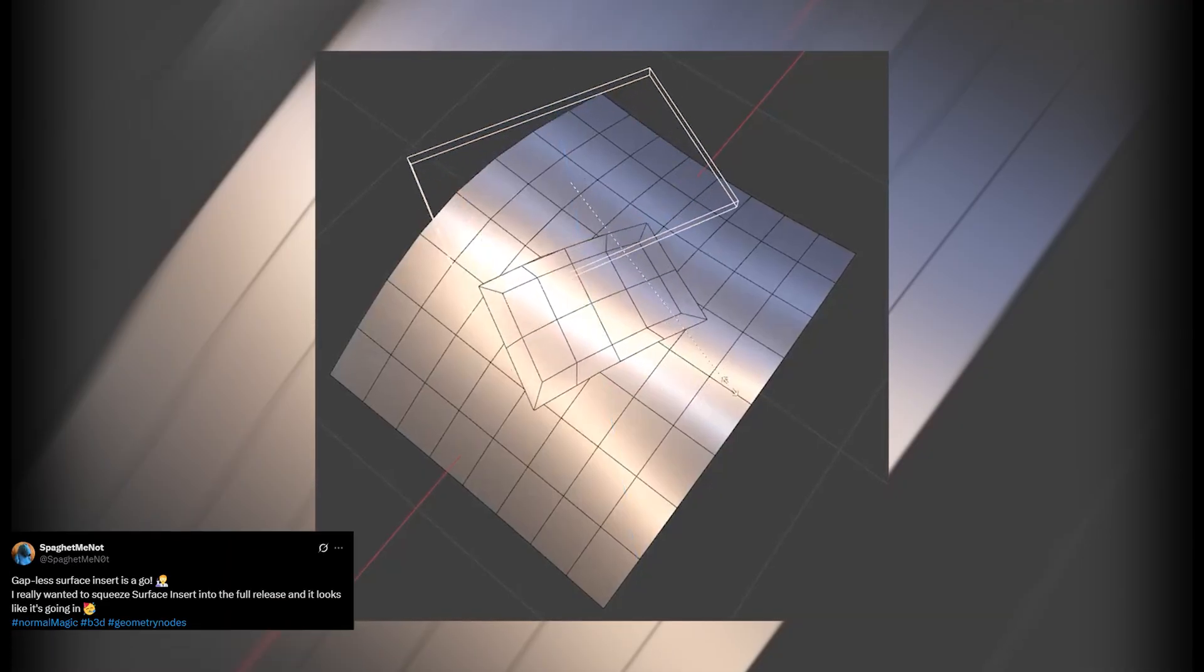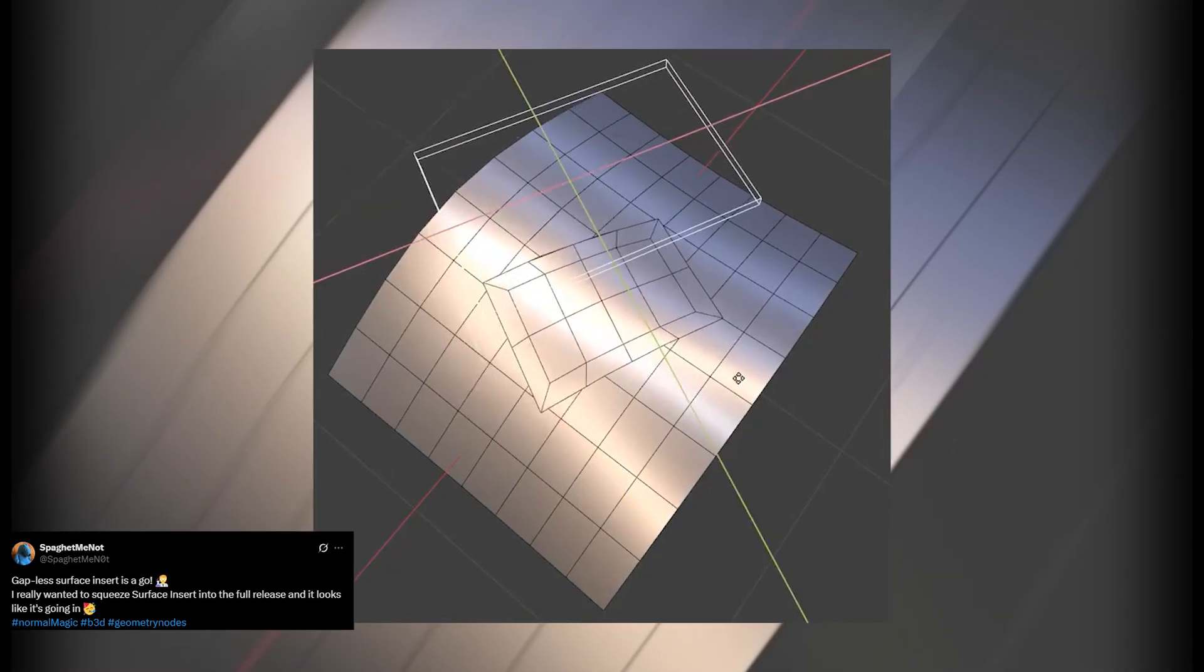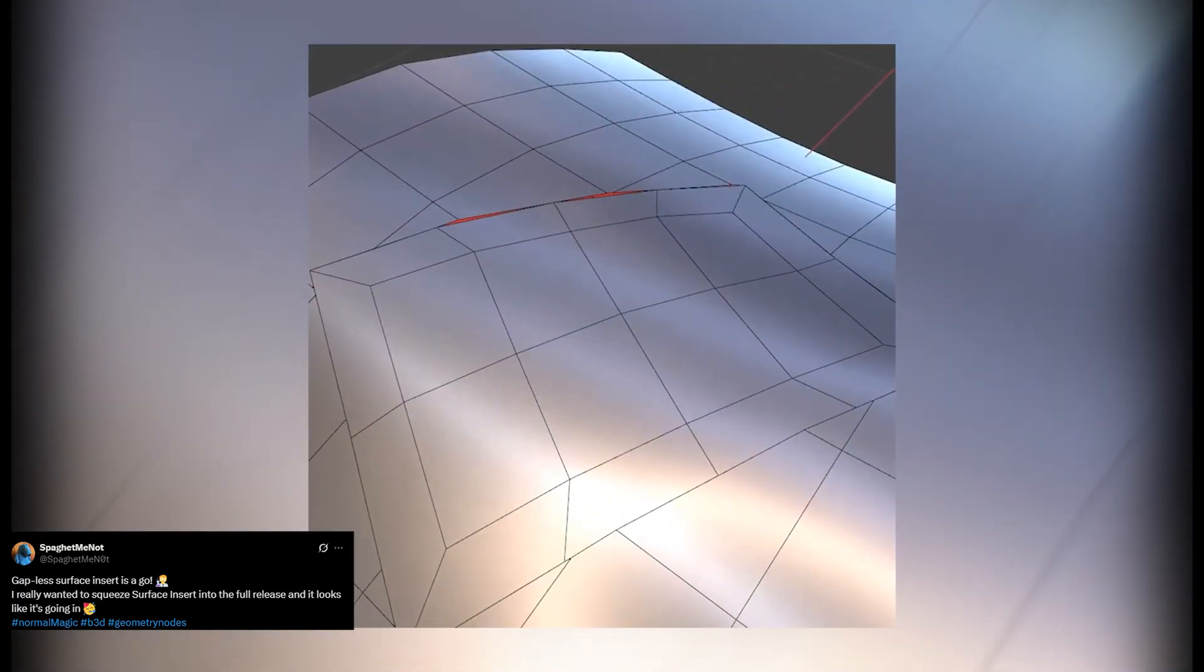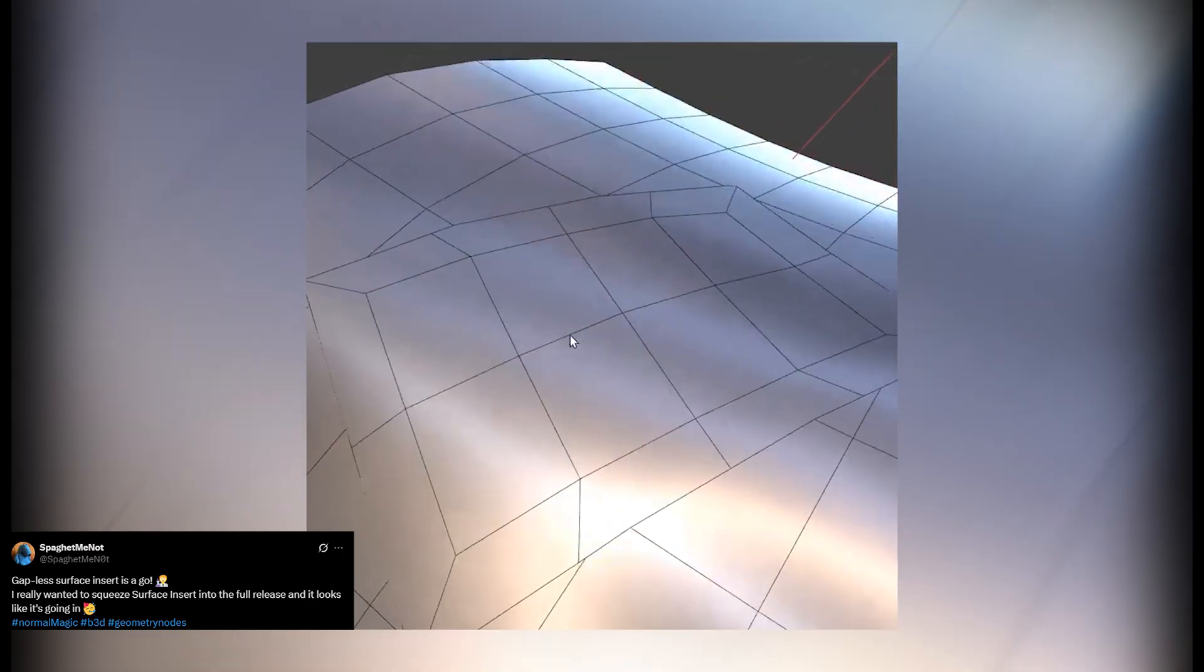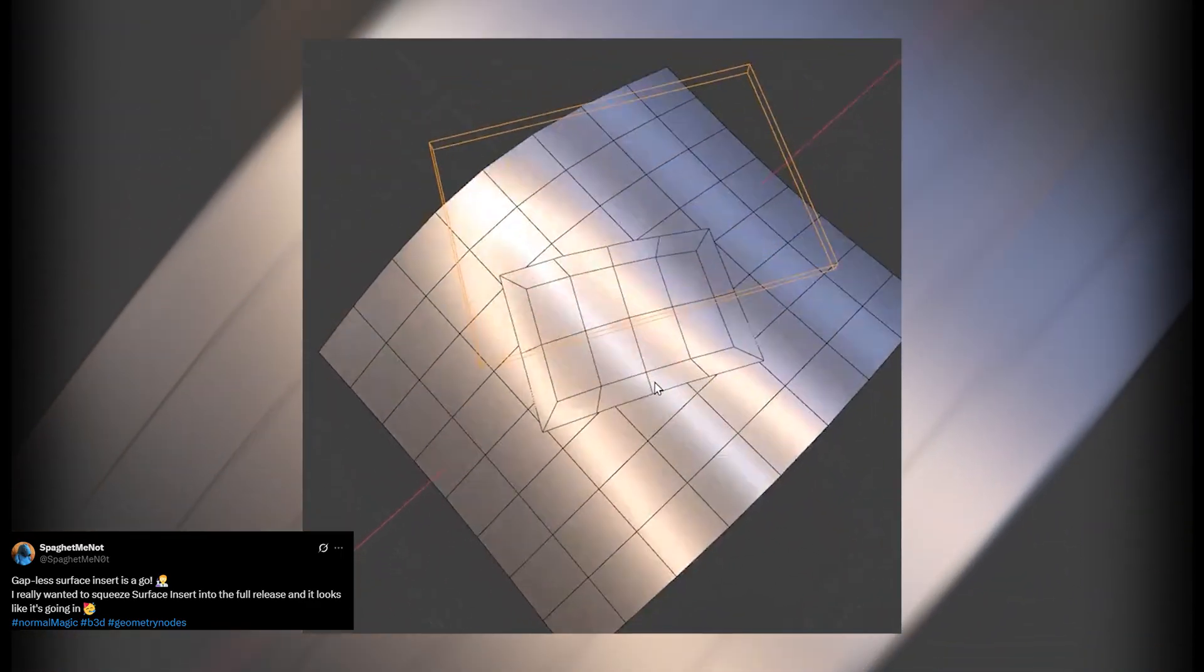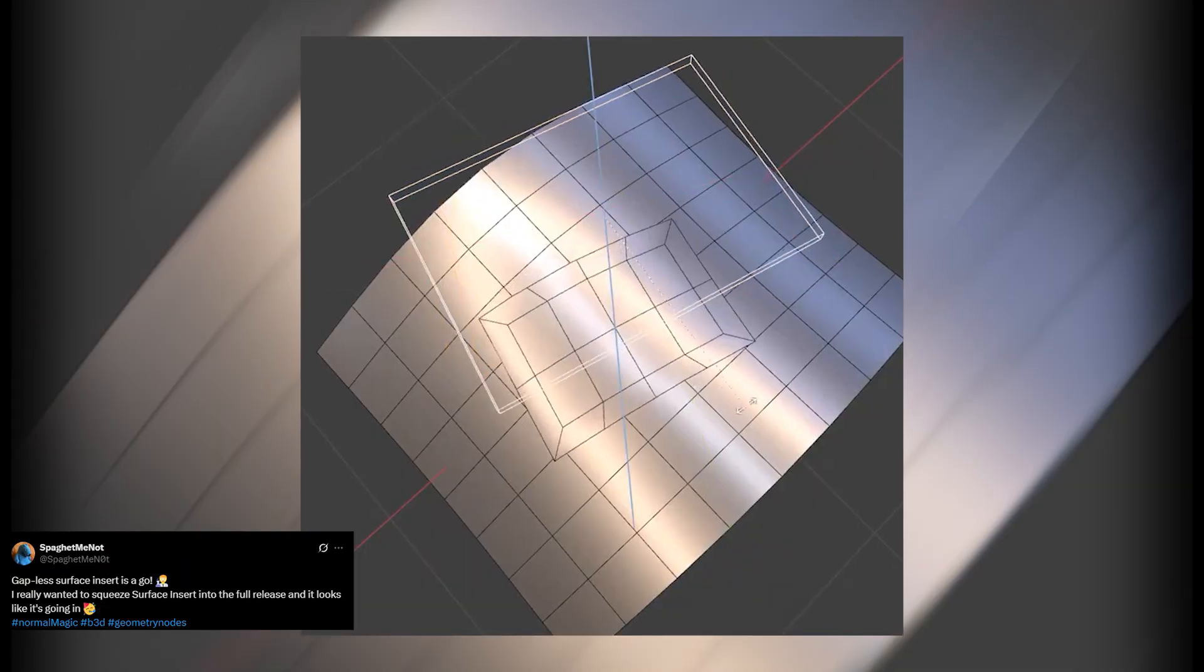I've used a lot of 3D apps and none of them have a native feature that lets you smoothly blend two objects without Booleans or plugins. Blender doesn't either, but Spaget Monat made an add-on that handles this using Geometry Nodes for most of the work. The result looks like a native feature.